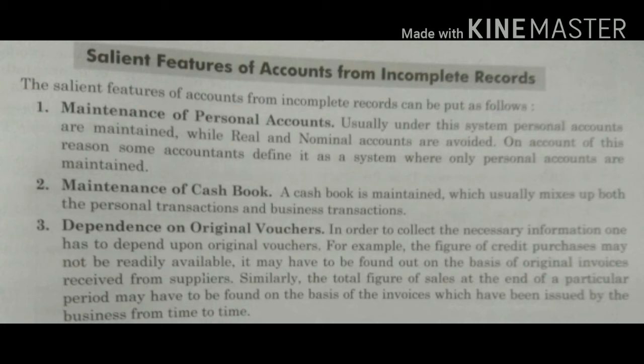Second feature is maintenance of cash book। A cash book is maintained which usually mixes up personal transactions and business transactions। Cash book के through हम debtors और creditors की entries pass करते हैं। Third feature is dependence on original vouchers। जितनी भी transactions single entry system में record करते हैं, वो सारी original vouchers पर based होती हैं — जैसे credit purchases के लिए supplier के invoices, या sales के लिए invoices।